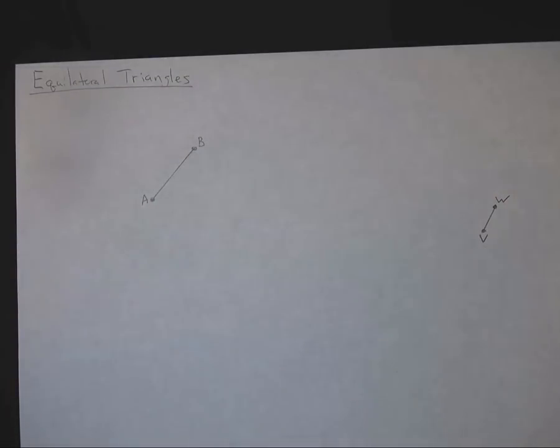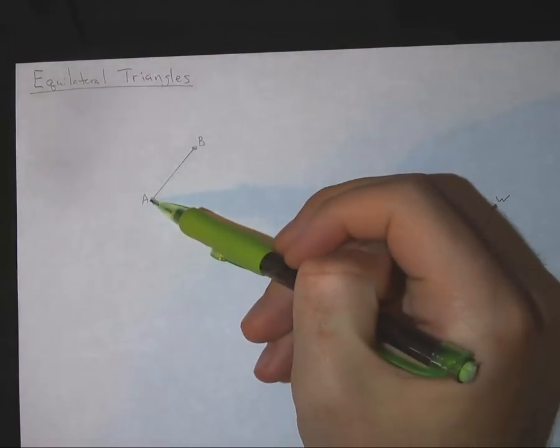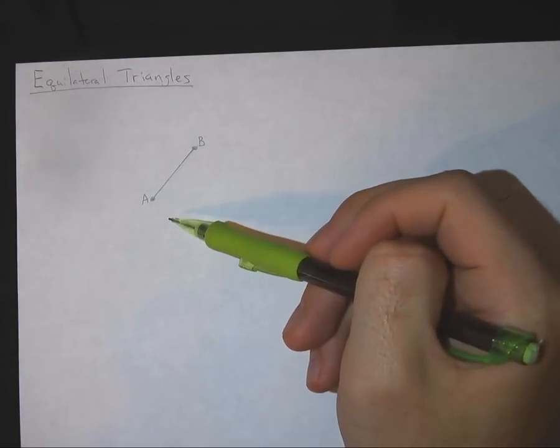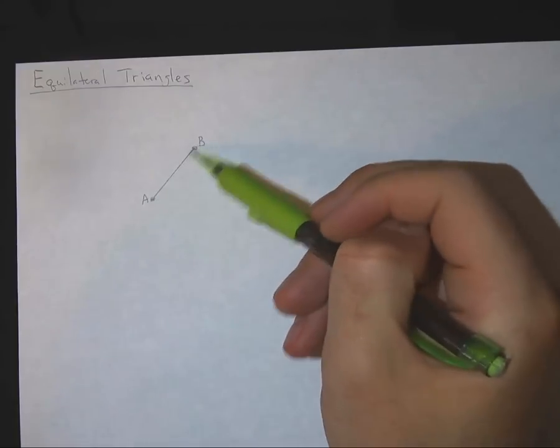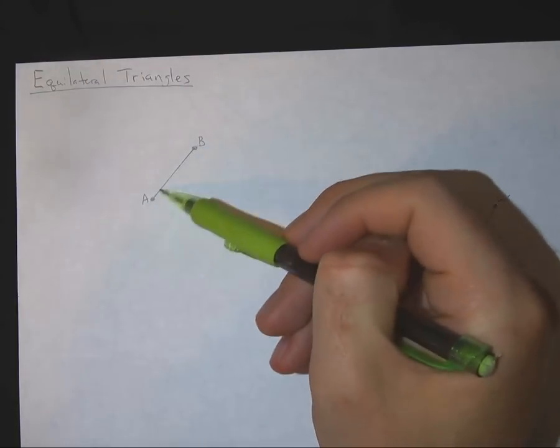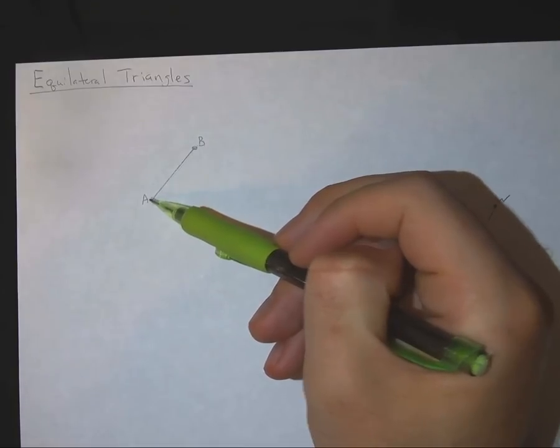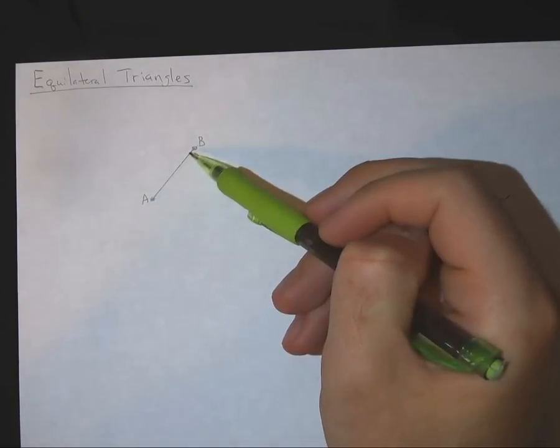Alright, in this lesson we're going to talk about making equilateral triangles. An equilateral triangle is a triangle where all the sides are the same. What we're going to do is be given a line segment, and we're going to make this equilateral triangle have all the same lengths as that line segment. All those sides have to be equal to or congruent to the line segment given, in this case AB.